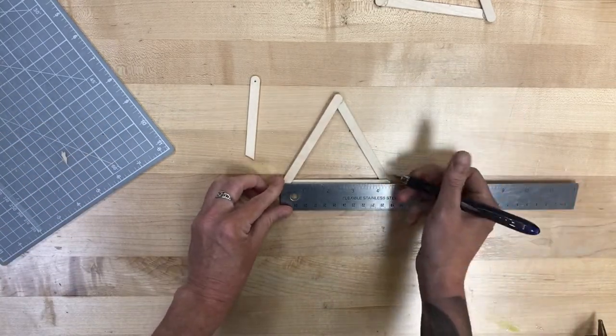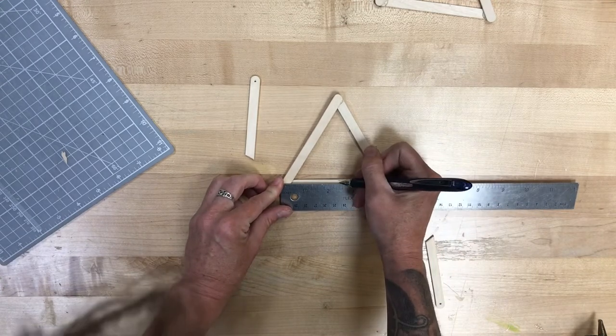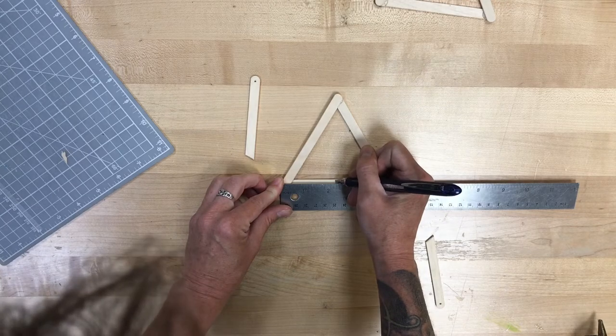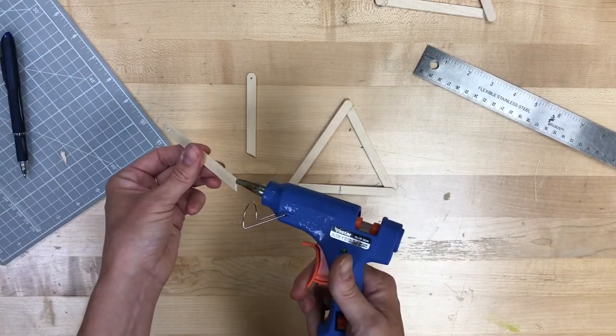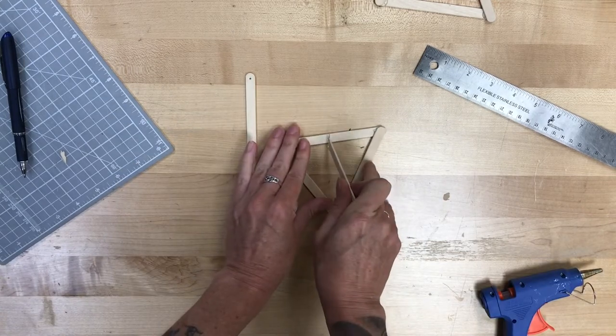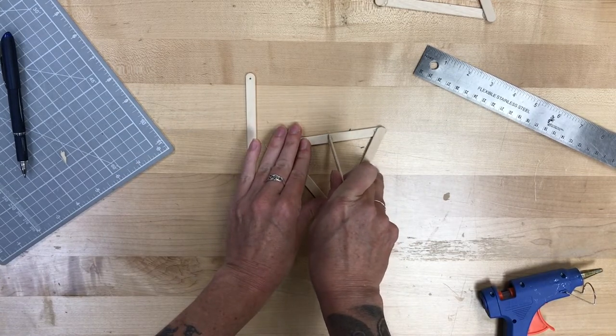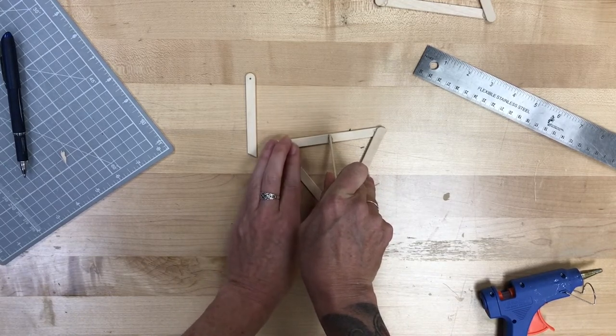Now on my first triangle I'm going to measure halfway between the corners on the bottom bar. So halfway is about right there. And I'm going to use some hot glue and affix that at that angle right to the middle. I'll hold it in place for a second to make sure that it dries all the way.